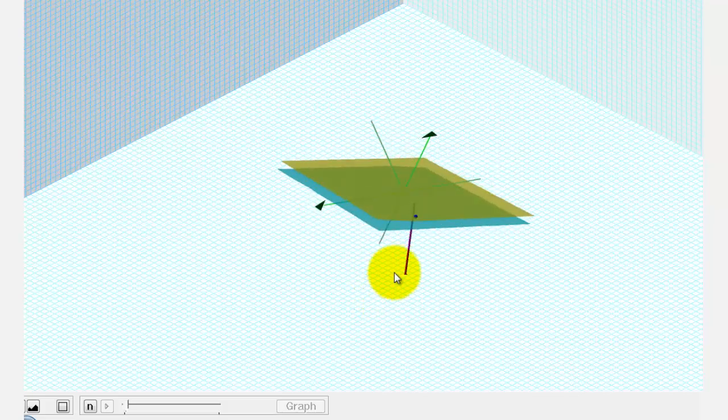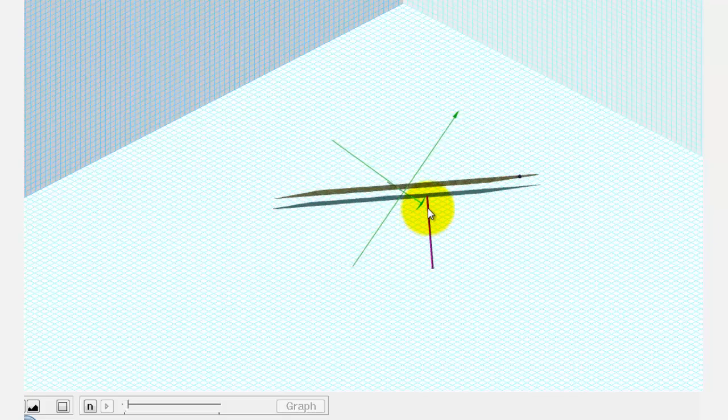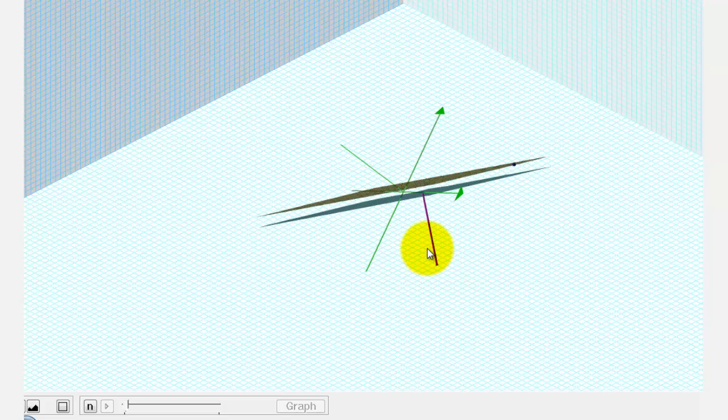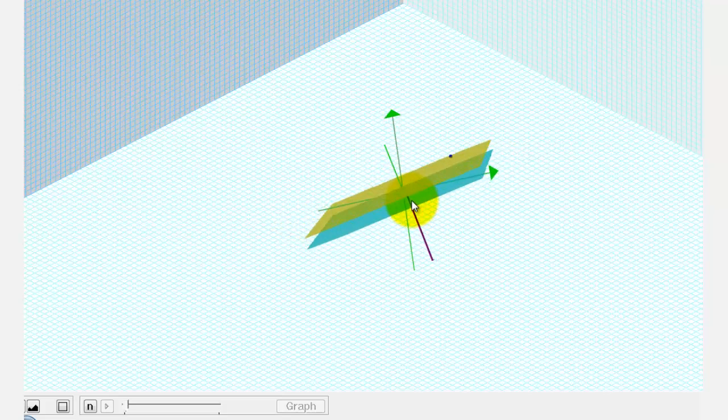We found a normal vector to the given plane which would be this purple normal vector here. And notice this vector would also be orthogonal or perpendicular to the yellow plane containing the blue point, the plane we're trying to find the equation of.